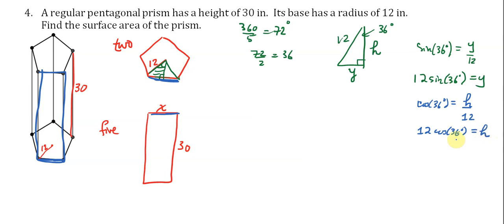Now, with that information in mind, we can actually find the area of the pentagons. So let's look at the area of the pentagons. So for the area of this one right triangle, it is 1 half times its base, which is Y, which is 12 sine 36, times the height, H, which is 12 cosine 36.